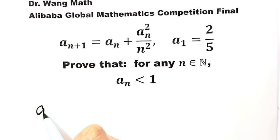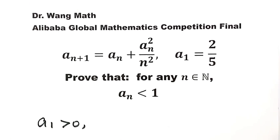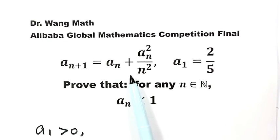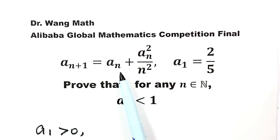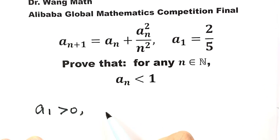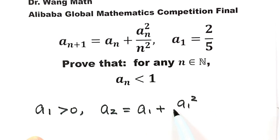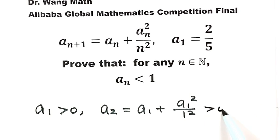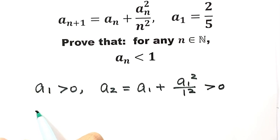Because a₁ equals 2/5, so a₁ is bigger than 0. Now let's look at the recurrence relation. The term aₙ₊₁ is determined by the preceding term aₙ plus a little bit extra from aₙ squared divided by n squared. So a₂ equals a₁ plus a₁ squared divided by 1 squared. Because a₁ is bigger than 0, so a₂ is also bigger than 0, then a₃ is bigger than 0, and so on. So aₙ is bigger than 0 for all natural number n.